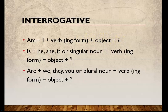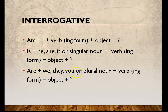For he/she/it or singular noun: Is + subject + ing form of the verb + object + question mark. For we/they/you or plural noun: Are + subject + ing form of the verb + object + question mark. Remember to always add a question mark in an interrogative sentence.